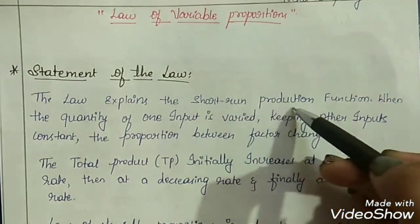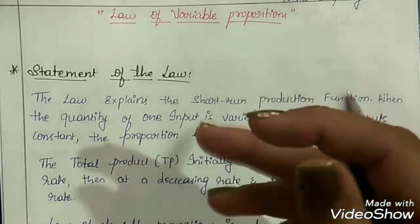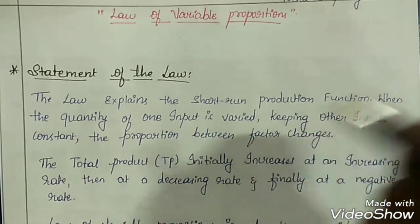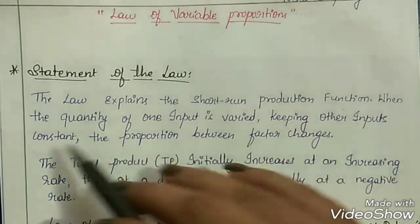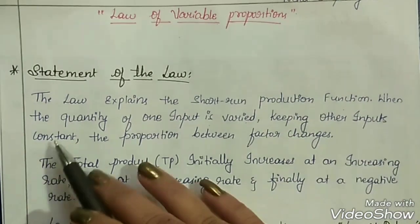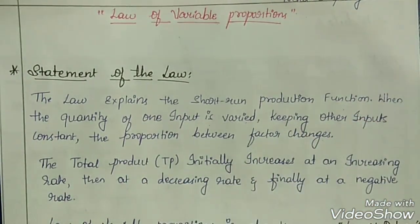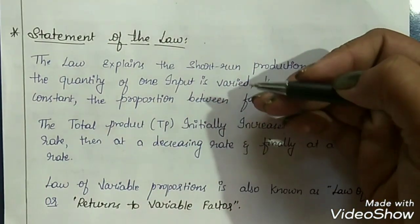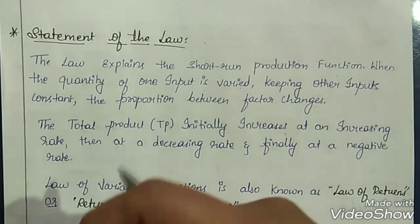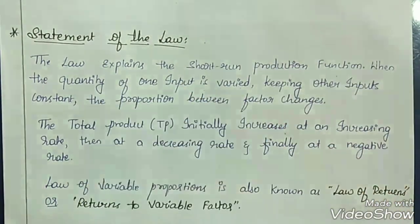This law explains the short run production function. In the short run, there will be Variable as well as Fixed Factors of Production. When the quantity of one input is varied, keeping other inputs constant, the proportion between the factors changes. This law explains what will happen if we go on increasing only one factor of production while keeping others constant.